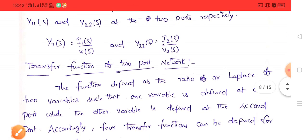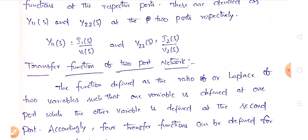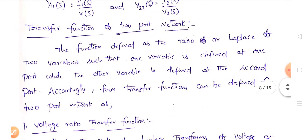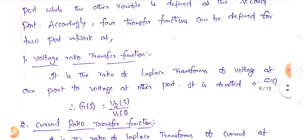Next, let us look at the transfer functions in two-port networks. A transfer function is the ratio of the Laplace transforms of two variables, where one variable comes from the first port and the other from the second port. In the driving point functions, voltage and current are taken from the same port, but for transfer functions they come from different ports.